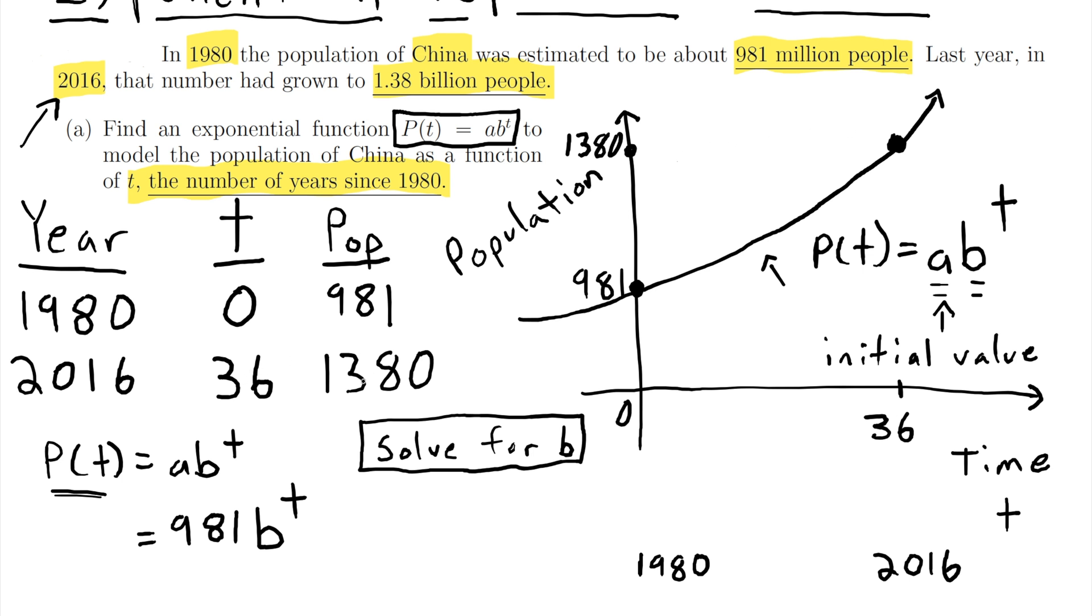When t is 36 the population is 1380. So all I'm doing is I'm plugging in this data point into my equation. So I need to solve this for b.